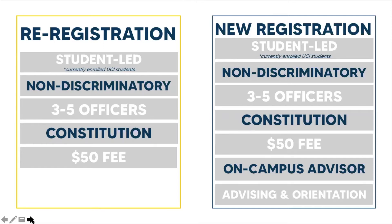In addition to the aforementioned requirements, new organizations must complete three additional requirements: finding an on-campus advisor, which can be a staff member, faculty, or graduate student; attending a new organization orientation, which provides information on running a successful organization and allows staff to learn more about your organization; and attending an advising meeting, where you will discuss the details, operations, and goals of your organization. Professional staff will review your constitution and provide additional resources. Once all requirements have been met, the organization will be approved as an official registered campus organization, also known as an RCO.